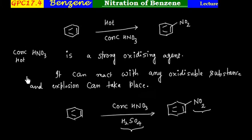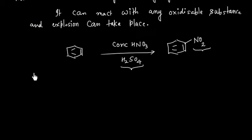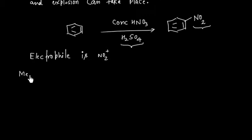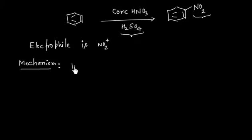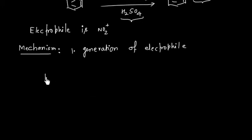If you remember, on benzene we have electrophilic aromatic substitution. So in this case, the electrophile is NO2 plus. Let us discuss the mechanism for this reaction. First step, that is generation of electrophile. We can generate electrophile from HNO3.